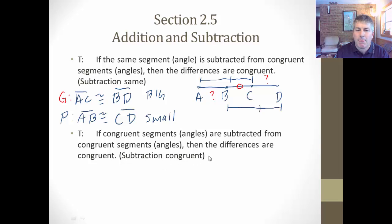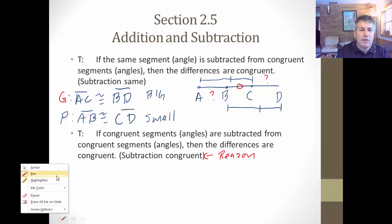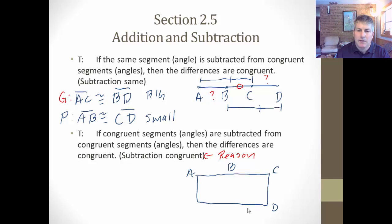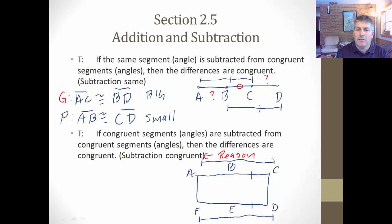To give an example, let's use the same setup we did for addition but go in the other direction. I have a diagram with points A, B, C, D, E, F. I'll give you that BC is congruent to ED, and I will also give you that FD is congruent to AC. So our given is that AC is congruent to FD and BC is congruent to ED. The bigger segments are congruent.